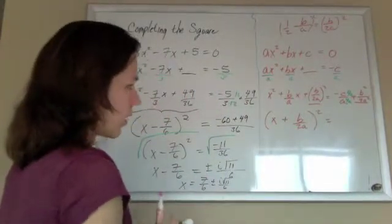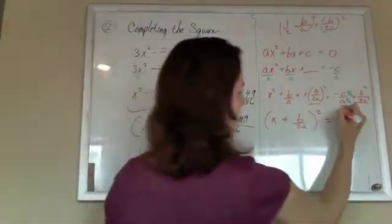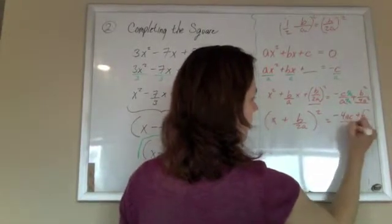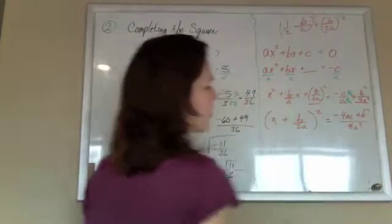And so now, I've got negative 4ac plus b squared, all over that common denominator, 4a squared.